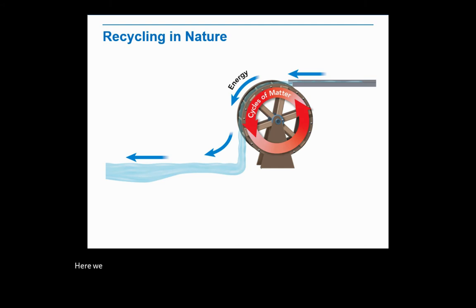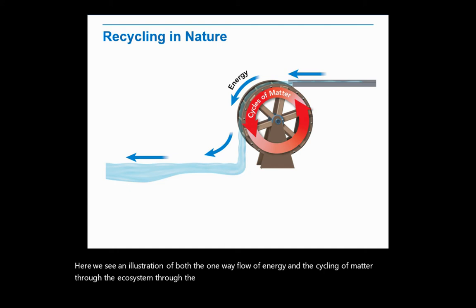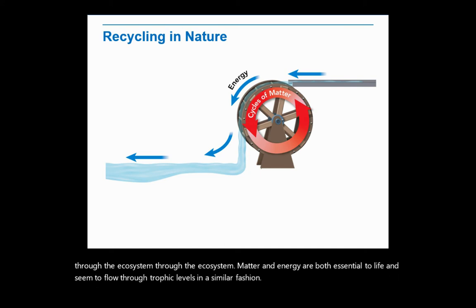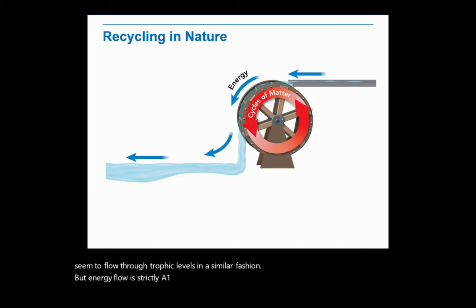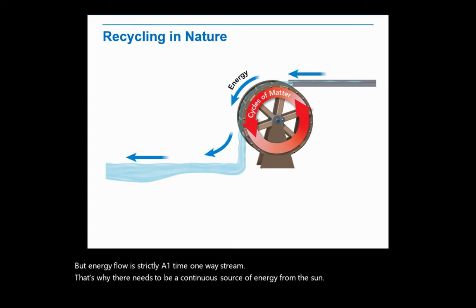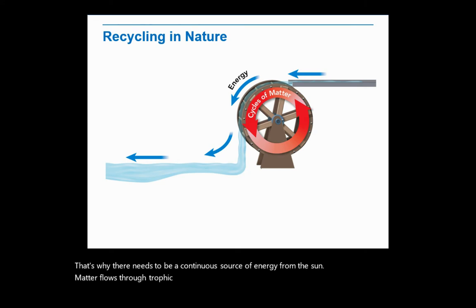Here we see an illustration of both the one-way flow of energy and the cycling of matter through the ecosystem. Matter and energy are both essential to life and seem to flow through trophic levels in a similar fashion, but energy flow is strictly a one-time, one-way stream. That's why there needs to be a continuous source of energy from the sun. Matter flows through trophic levels and then flows through cycles that reuse or recycle nutrients within and between ecosystems.